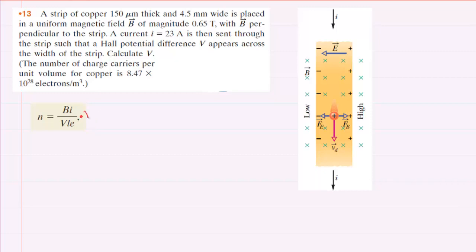So let's multiply both sides of this equation first by V. This way, the Vs will cancel out on the right-hand side of the equation. So now we have VN is equal to BI over LE. We'll explain what all those letters mean in just a moment.